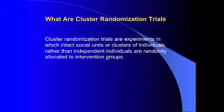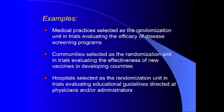Cluster randomization trials are simply experiments in which social units or clusters of individuals, rather than independent individuals, are randomly allocated to intervention groups. There are many examples of different randomization units: medical practices selected as the randomization unit in trials evaluating the efficacy of disease screening programs, communities selected in trials evaluating the effectiveness of new vaccines in developing countries, hospitals selected in trials evaluating educational guidelines directed at physicians and administrators, and several more unusual randomization units seen in the literature.